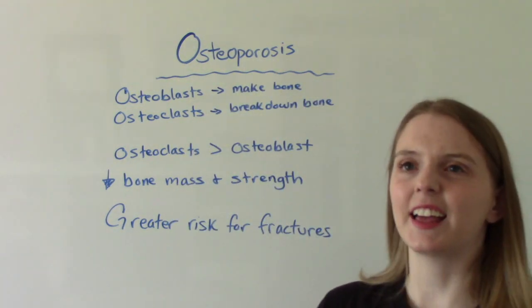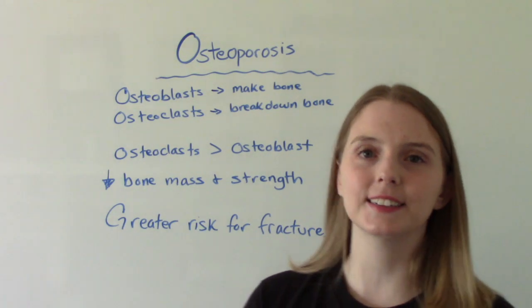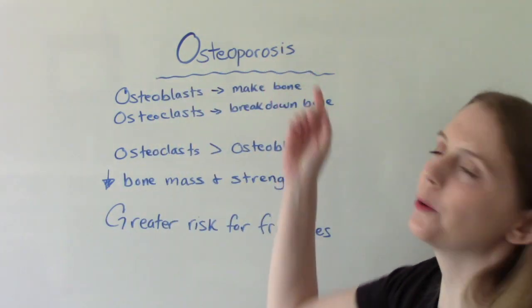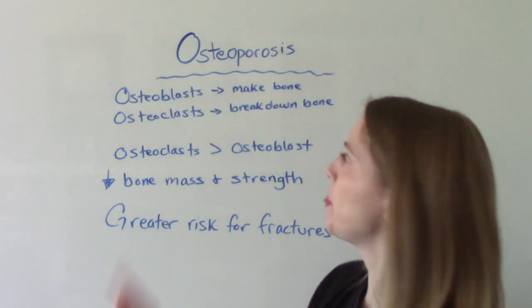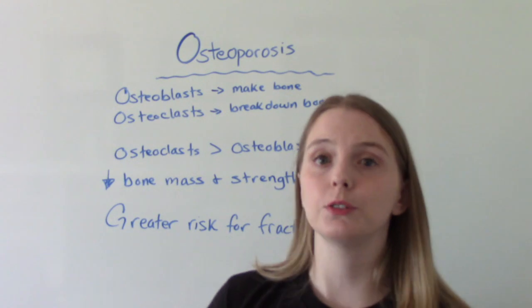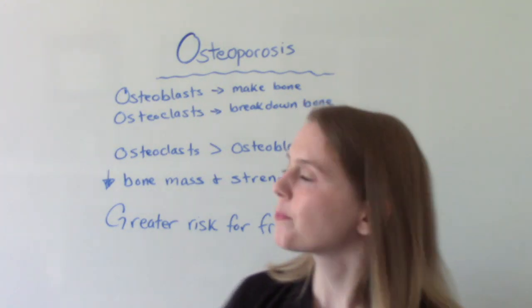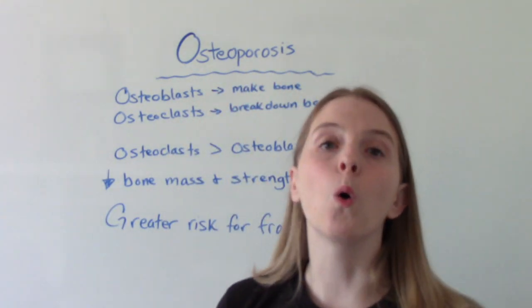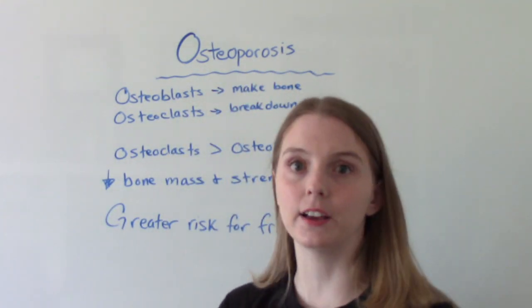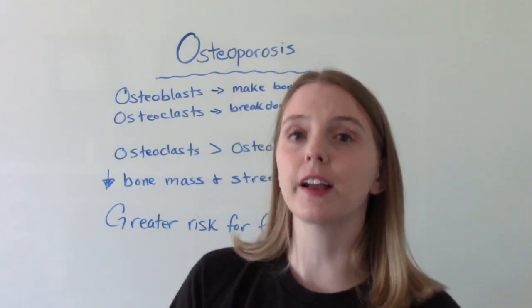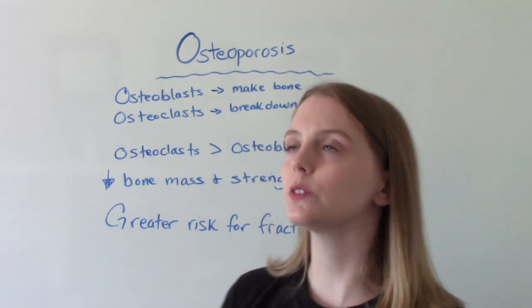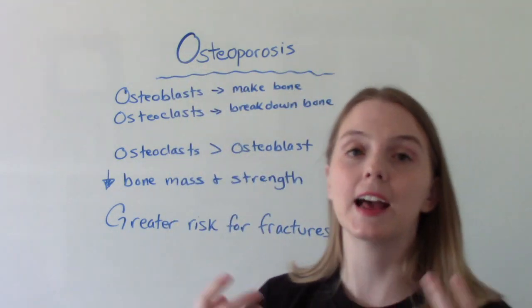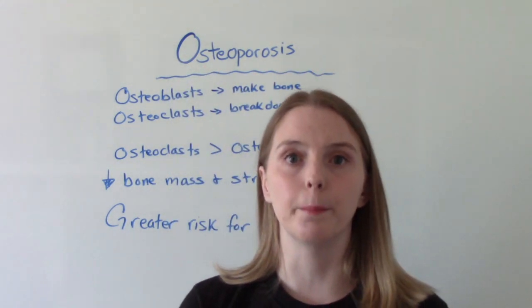The first thing — let's break down the word osteoporosis. Osteo is in reference to the bone, and porosis, like porous, means holes in the bone. So think of it that way: somebody who has osteoporosis has weak bones.